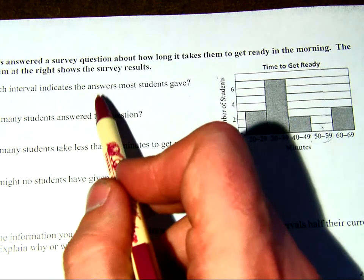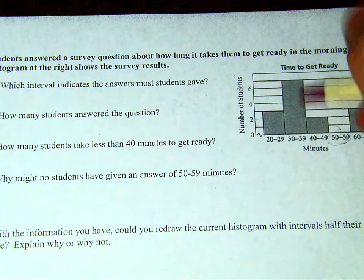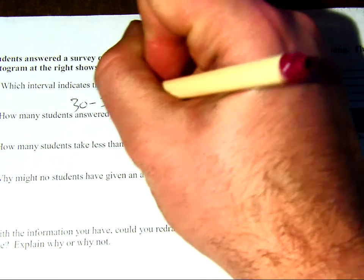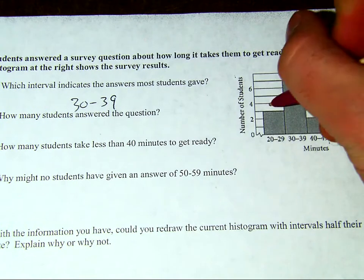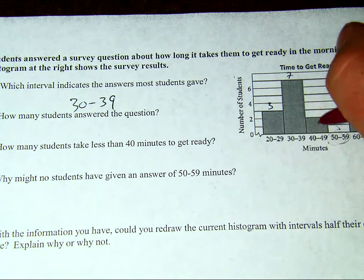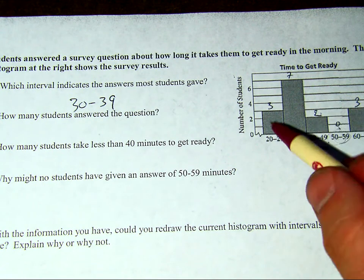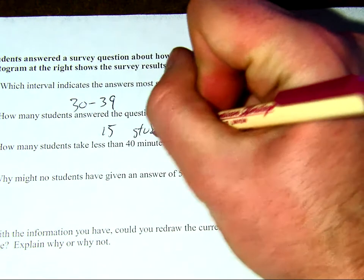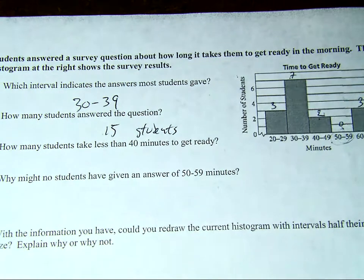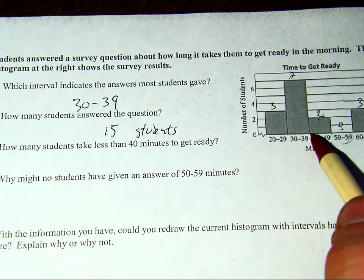So, which interval indicates the answers that most students gave? Most students put in the 30 to 39 range. How many students answer the question? I have a total of three here. I have seven here, two here, zero here, and three here. So, I have three plus seven is ten, plus two is twelve, plus three is fifteen. Fifteen students. How many students take less than 40 minutes to get ready? Less than 40 is all of these. I have a total of ten that took less than 40 minutes.